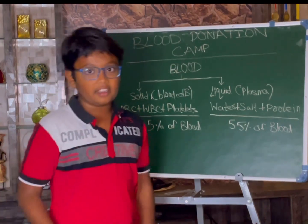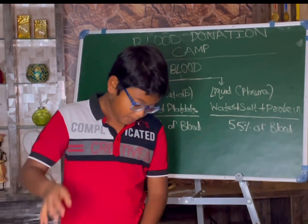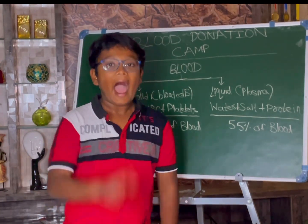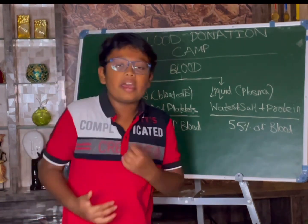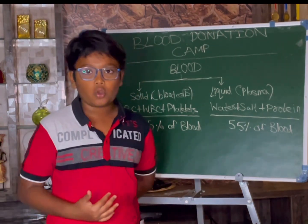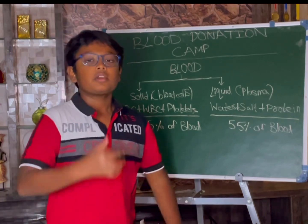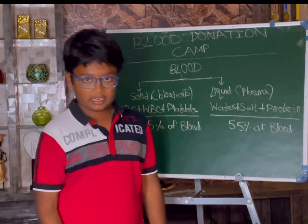Now let us talk about the formation of blood. For children like me, blood will be produced in the thyroid. For adults, blood will be produced in the bone marrow or the spinal cord, where blood will be produced mainly.